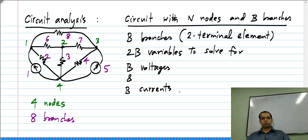So now we have to solve for 2B variables, B voltages and B currents, that means that we need 2B independent equations.